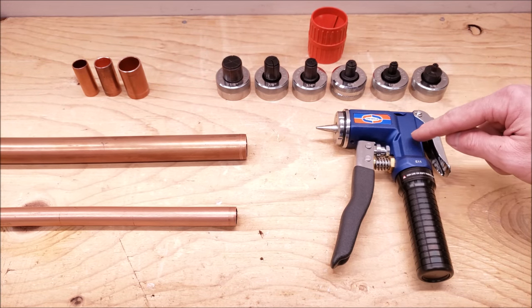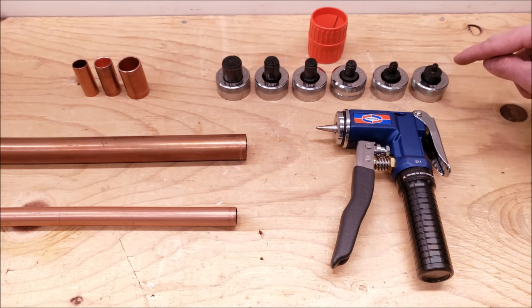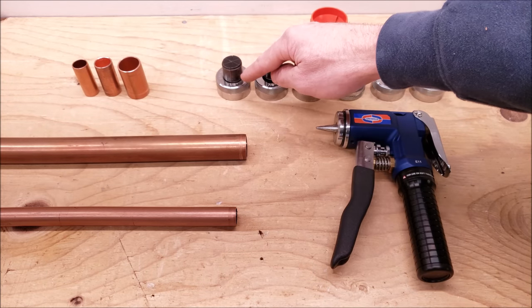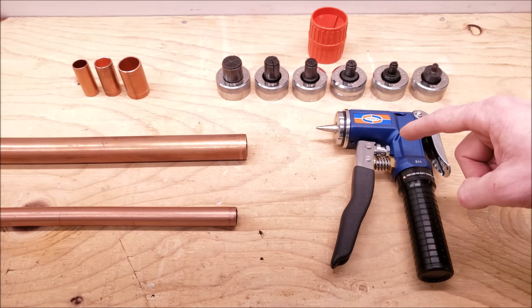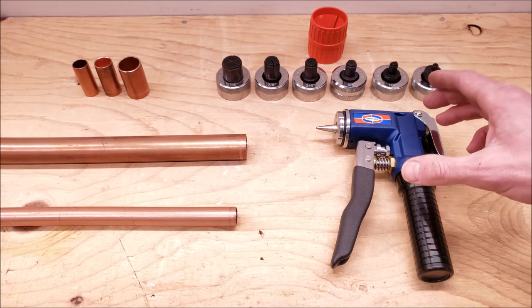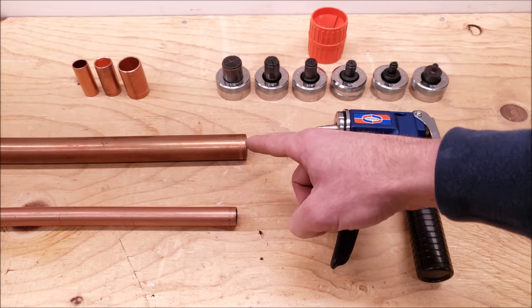So this happens to be a uni-weld hydraulic swedger, and the sizes range from three-eighths all the way up to inch and eighth. The hydraulic swedging tool is just about the only tool that can handle swedging inch and eighth copper tubing.